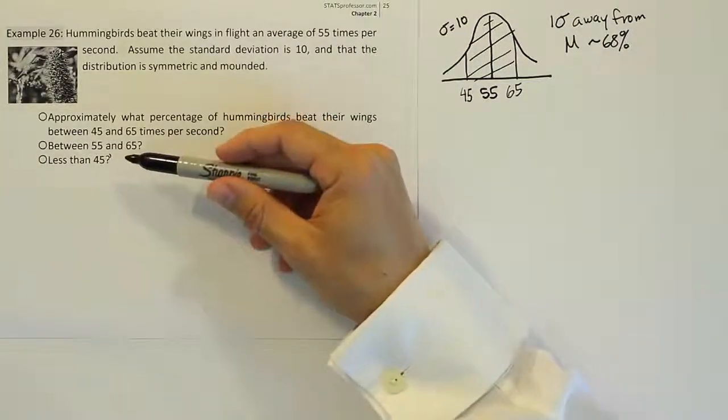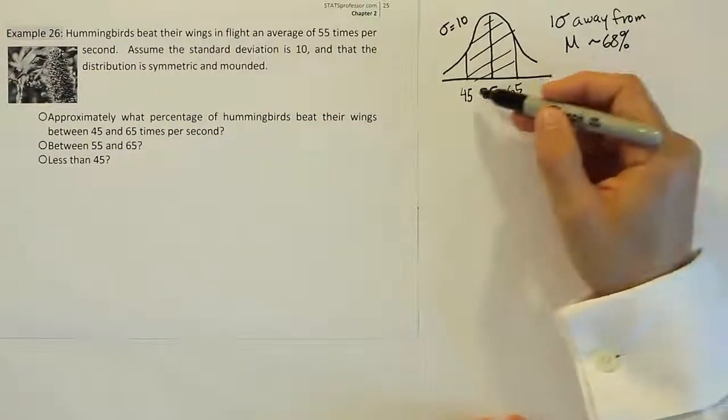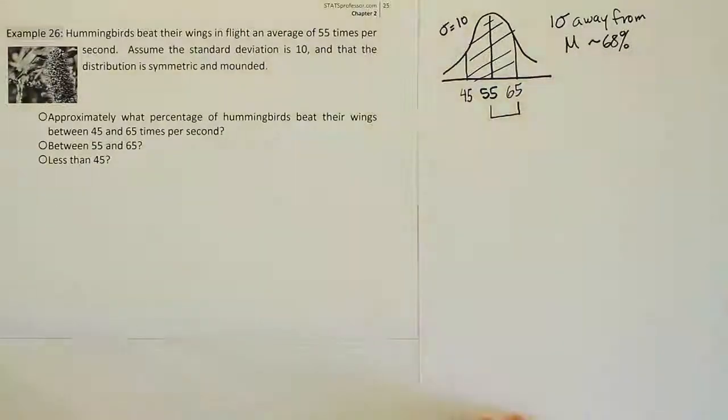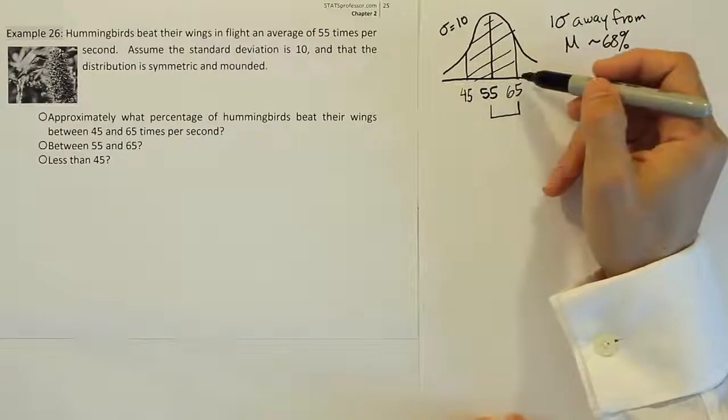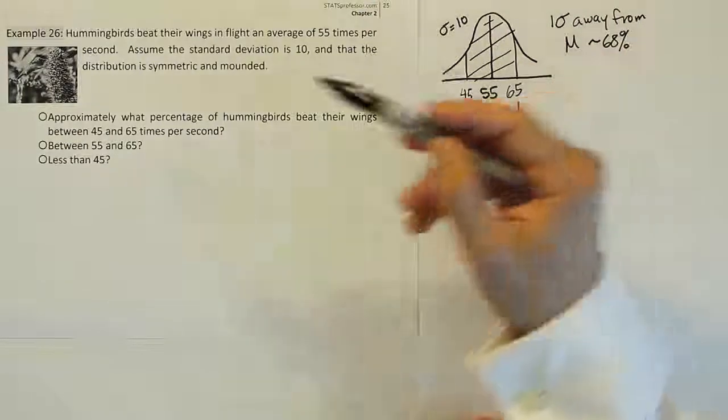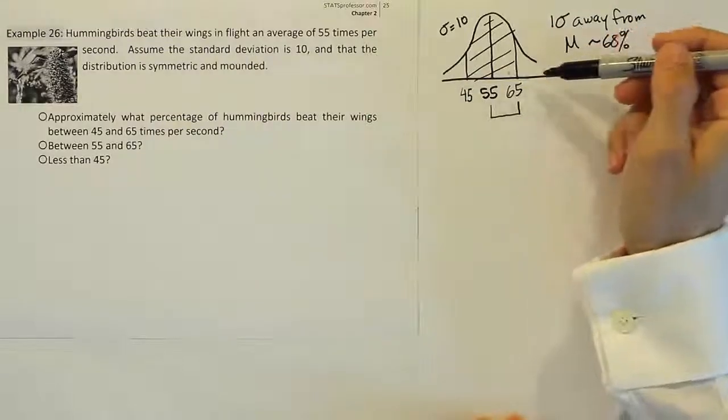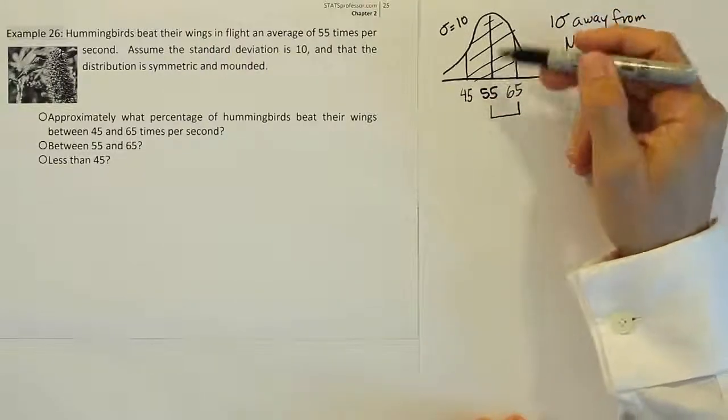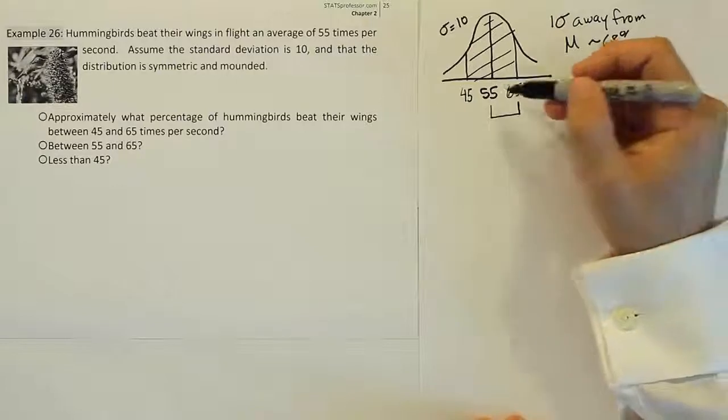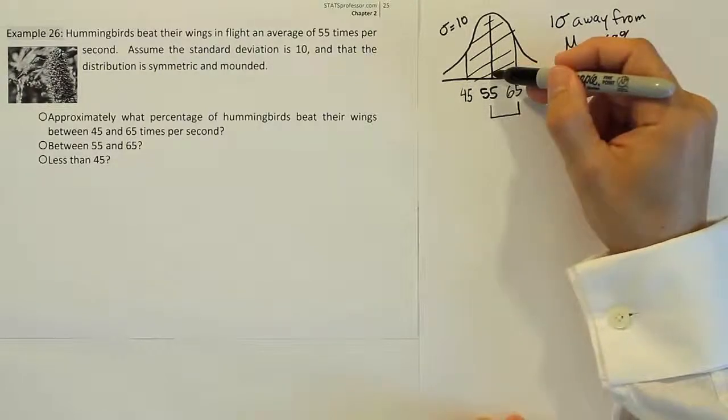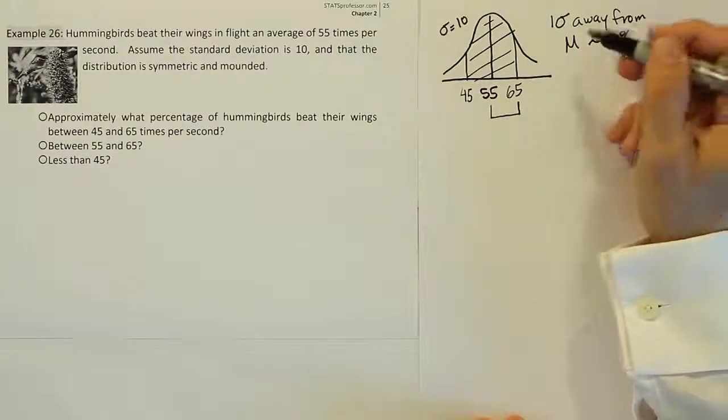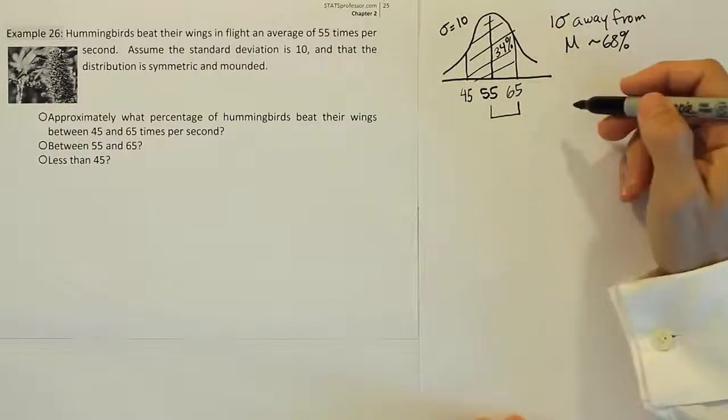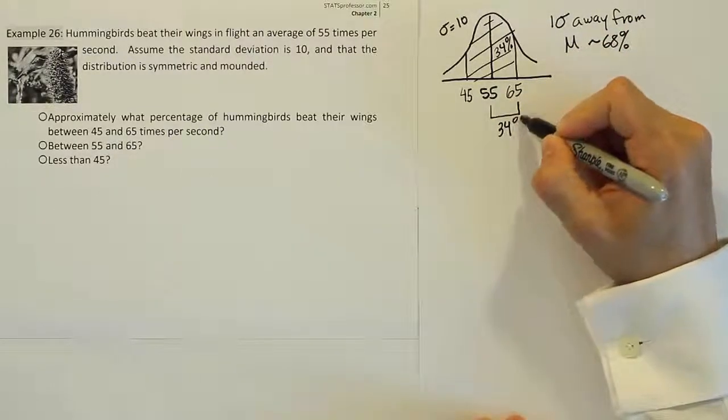Let's look at the second part. The second part says between 55 and 65. I'm not going to do a new drawing here. I'm just going to look at my drawing and say, between 55 and 65 is between these two parts. And if the whole thing was 68, and if bell curves are symmetric, symmetric means that they're equal on both sides of the middle, they're mirror images. The right side is a mirror image of the left side when you look at it from the perspective of the middle line here. That tells us that if the whole area from here to here is 68, this half must be half of 68, which is 34%. So the answer to part B is 34%.